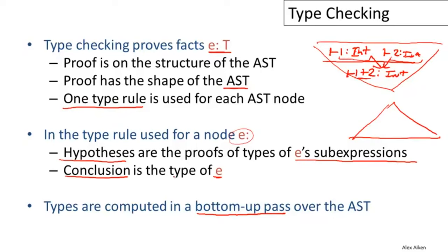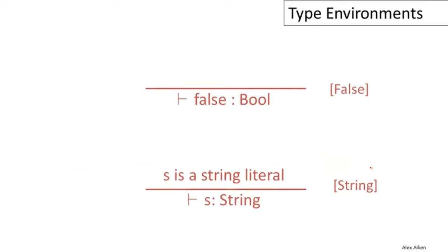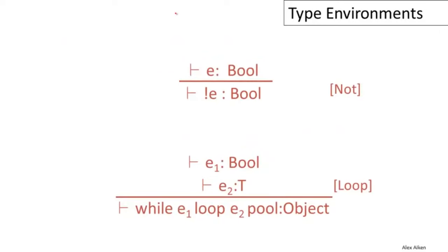In this video we continue with cool type checking by discussing type environments. More type rules: the constant false has type Bool; a string literal S has type String; and 'new T' produces an object of type T — so 'new T : T'. If expression E has type Bool, then 'not E' also has type Bool. For a while loop, E1 (the predicate) must have type Bool, and E2 (the body) can have any type, but the entire while expression has type Object.